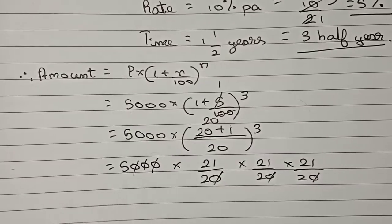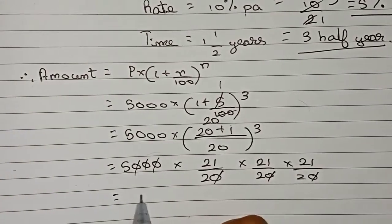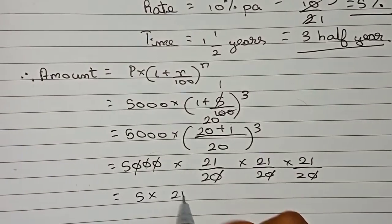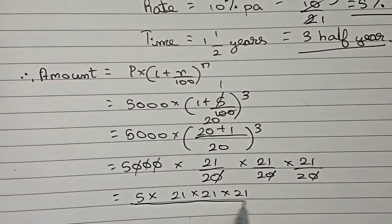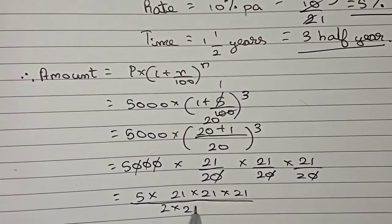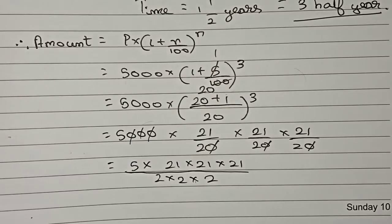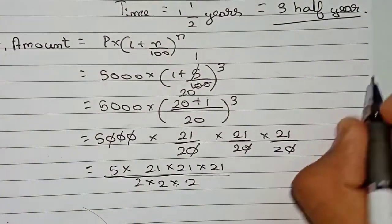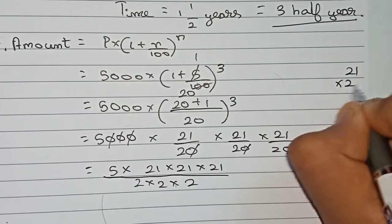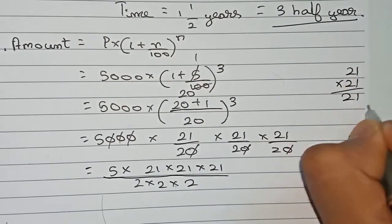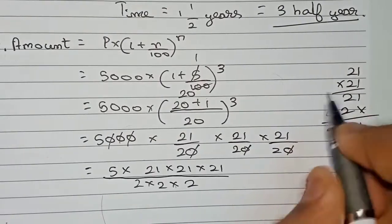After cancellation, we have 5 × 21 × 21 × 21 divided by 2 × 2 × 2. First, 21 × 21: 1×1=1, 1×2=2, 2×1=2, 2×2=4, giving 441.